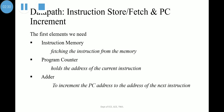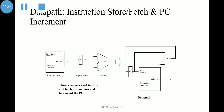The second figure combines all three elements — instruction memory, program counter, and adder — to make a data path. To execute any instruction we must start by fetching the instruction from memory. To prepare for executing the next instruction, we must also increment the program counter so that it points at the next instruction, which is four bytes later.